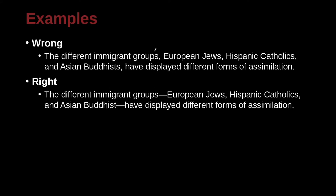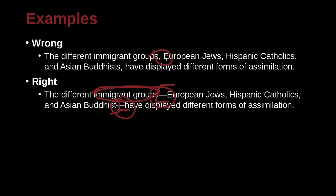The different immigrant groups — European Jews, Hispanic Catholics, and Asian Buddhists — have displayed different forms of assimilation. Here we have the example of the dash. The dash sets out this piece of information: European Jews, Hispanic Catholics, and Asian Buddhists. I want to explain what 'immigrant groups' means, so I use a dash. If it goes to the end of the sentence, you just put a period. But if you want to write more, you add another dash to signal it's finished, and then you continue your sentence. We can read this by skipping over the dash: 'The different immigrant groups have displayed different forms of assimilation.' Perfect — that sentence makes sense. This piece is explaining exactly what 'immigrant groups' means. If you only use commas, it becomes very confusing — is it listing something or explaining something? A dash can be very handy.